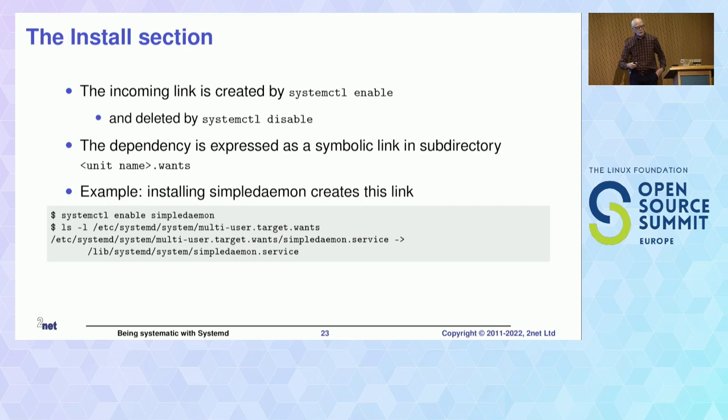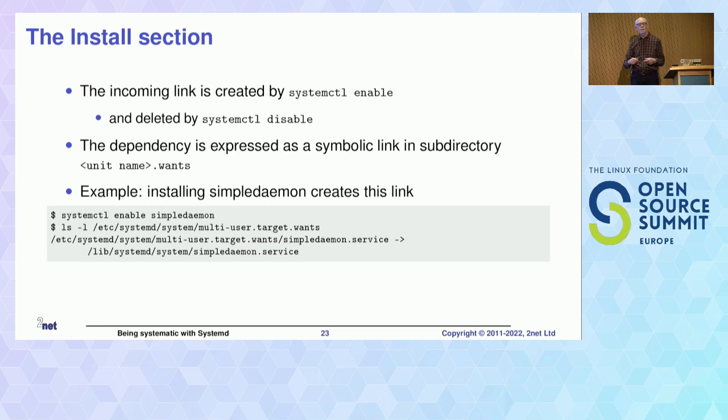You may wonder why do it in this slightly indirect way. The reason is that if we didn't have this facility, every time I added a new service to my system I would have to go and edit the multi-user target, and the whole thing becomes unmanageable. By encoding that information in the service unit you're installing rather than in the target unit, it becomes much more modular. When I install my service, it says 'I am part of the multi-user target,' and the symbolic link takes care of that.